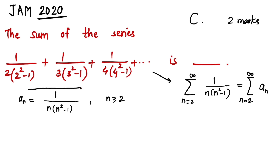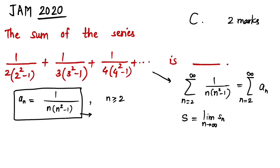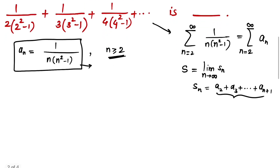We just have to take the partial fraction to find the sum. This is nothing but the limit of Sₙ, where Sₙ is the sum of first n terms, with n running from 2 to infinity — so it is a₂ + a₃ + ... + aₙ₊₁. For this, let us find what aₙ is in general by taking the partial fraction.